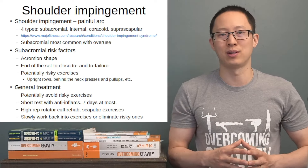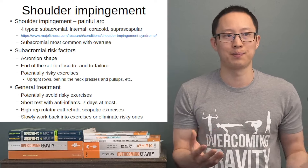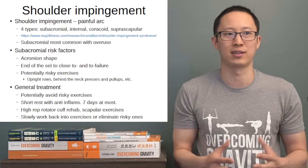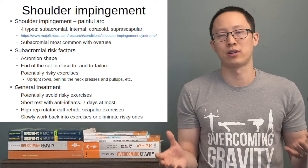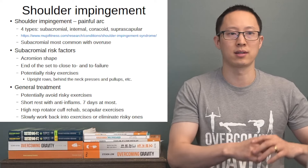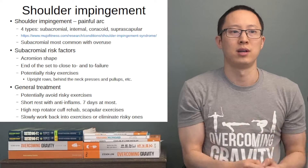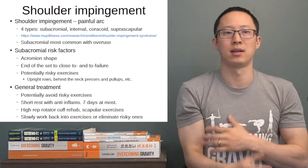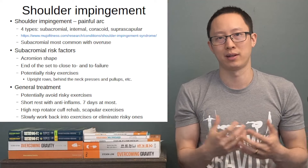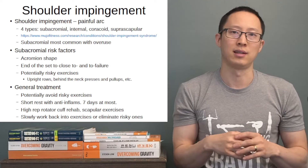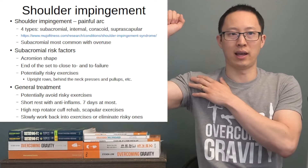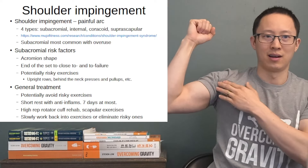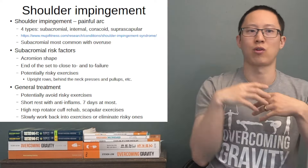The acromion shape is one of the biggest risk factors — some can curve down, causing potential mechanical rubbing of structures underneath. Training to failure, especially near the end of a workout when you're getting very tired, is a big risk factor for impingement, and is often how people start to get pain and injury underneath there, especially if they're doing too much volume.